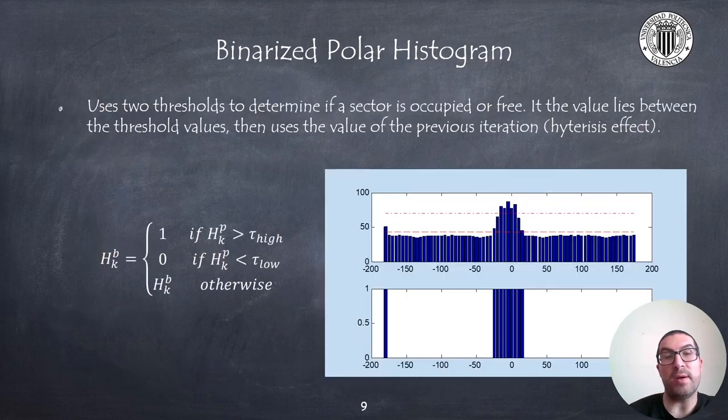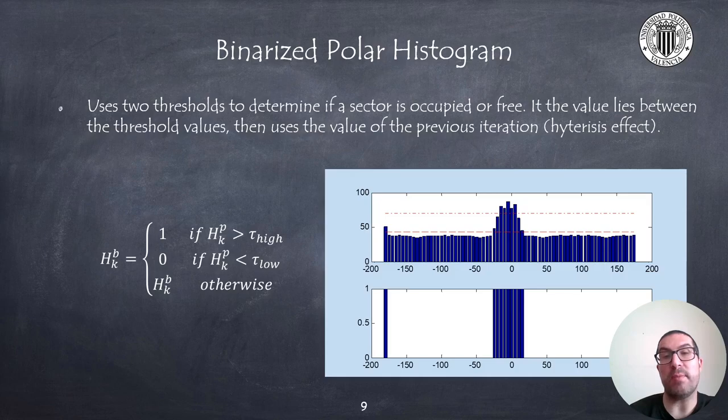The binary polar histogram uses two thresholds to determine which sectors are occupied and which of them are free. It transforms the accumulated values into ones or zeros, depending on whether they are above or below these thresholds. Indeed, in case of being between the thresholds, a hysteresis mechanism is used so that the previous value, or the value that we had in the previous situation, is used.